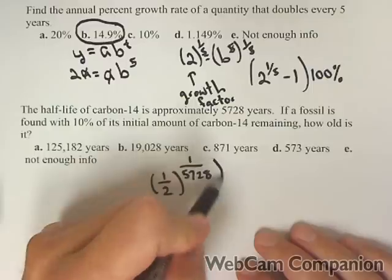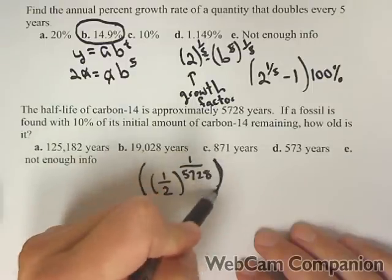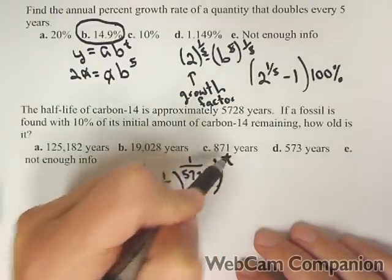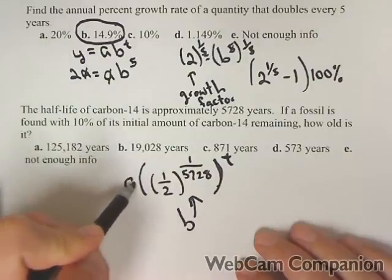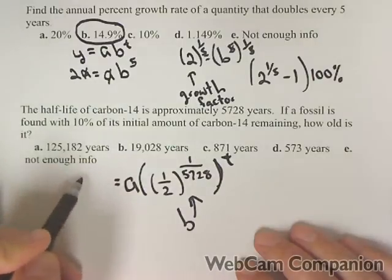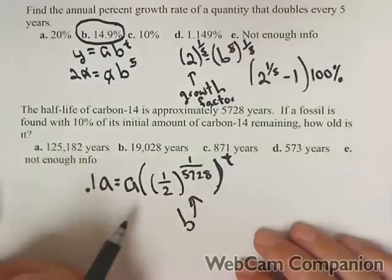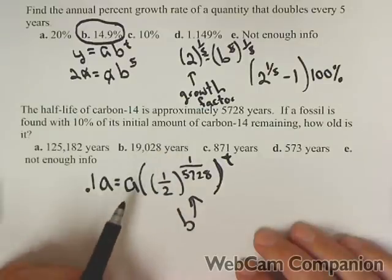Now, let's start to build a model for this guy. Well, this is our base, b, to the t, and here's our initial, and we want to know when 10%, so 0.1, of the initial is remaining. So it's very similar to the problem we just worked.